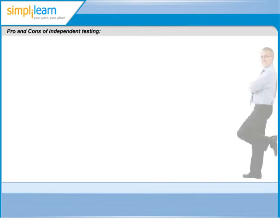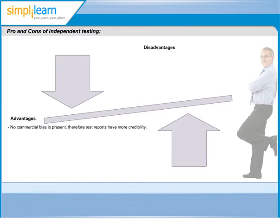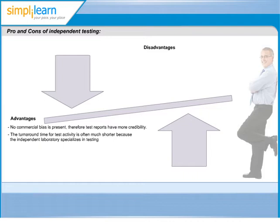Now that we have seen how quality and independent testing are related, let us look at a few advantages and disadvantages of independent testing. Some of the main advantages include: test reports are more reliable and will have more credibility as there is no commercial bias present. The testing turnaround time is much shorter as independent test organisations are well trained and specialised in testing activities.